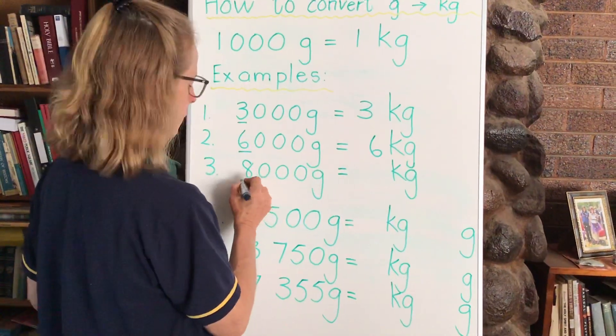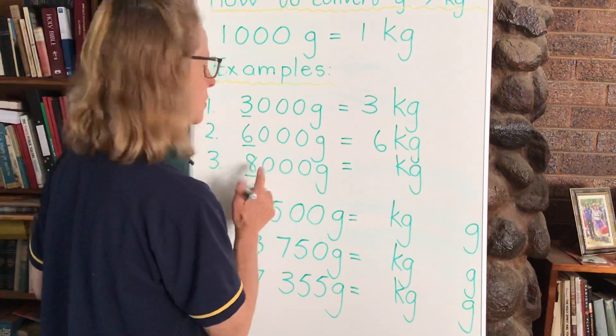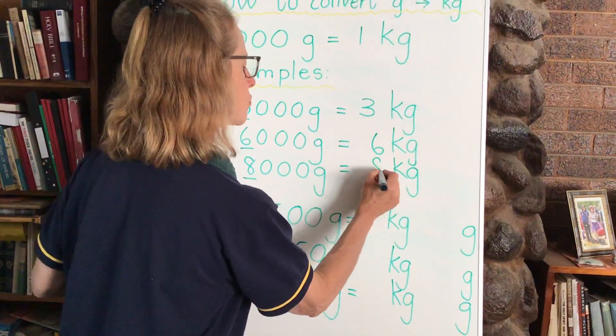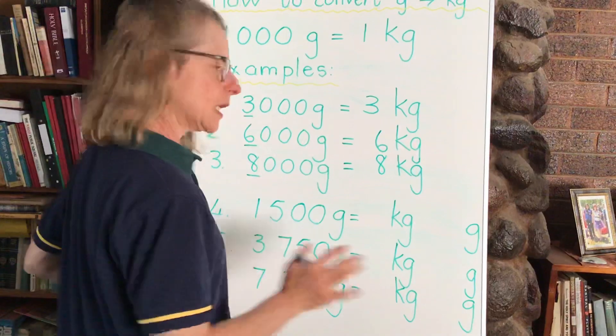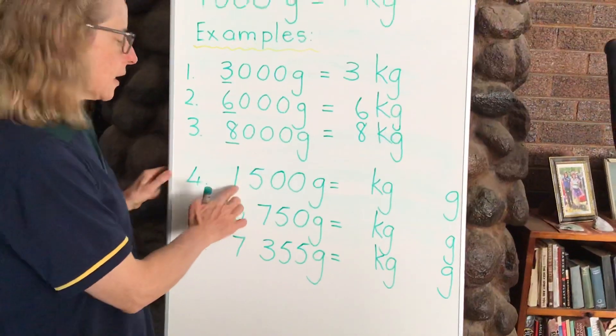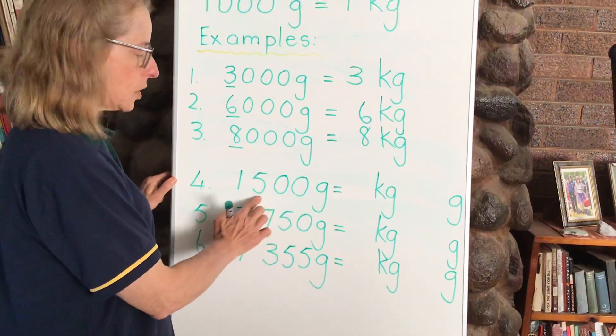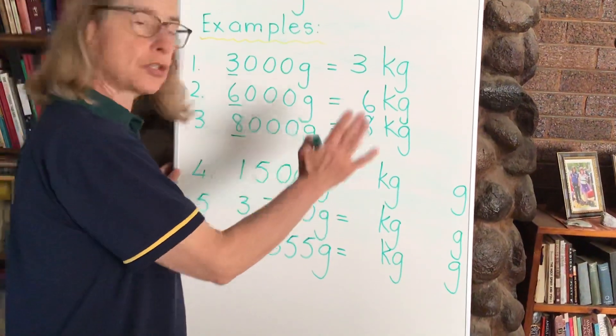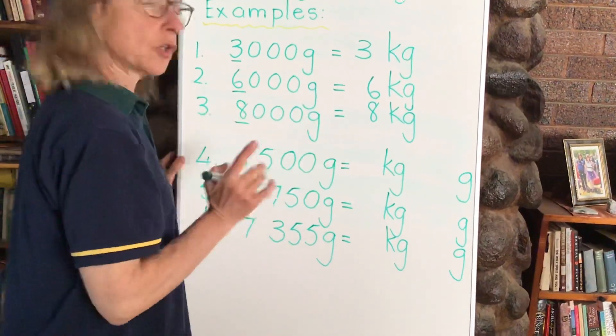And on number 3 we've got 8,000 grams so therefore it will of course be, that's right, it will be 8 kilograms. Now what happens in a case like number 4 when you've got thousands but you've also got hundreds and maybe you'll have tens and units as well. And let's have a look what we do now.